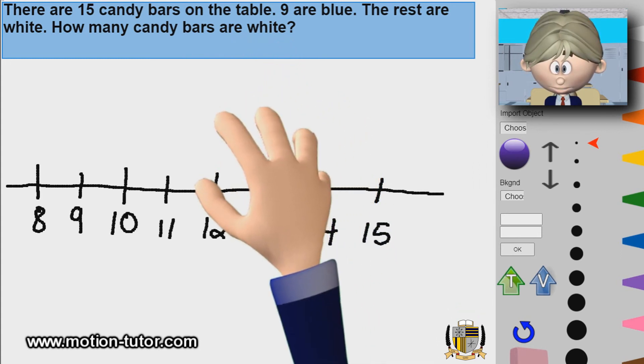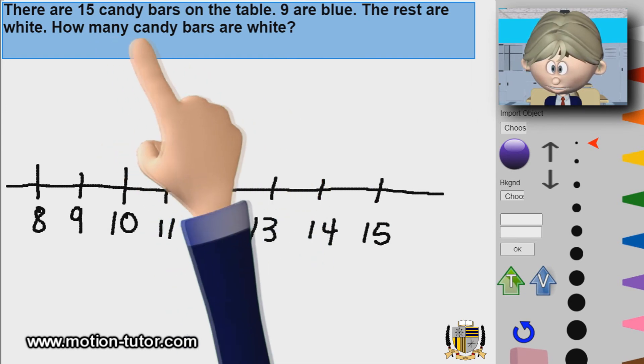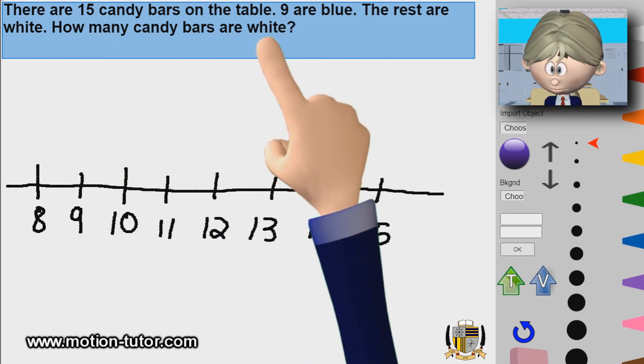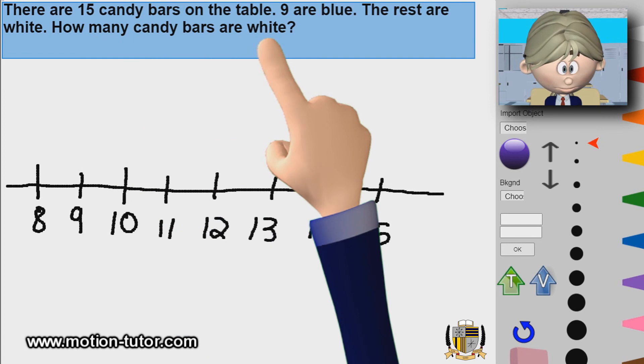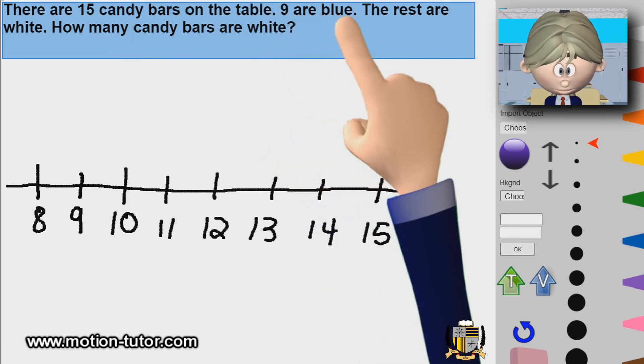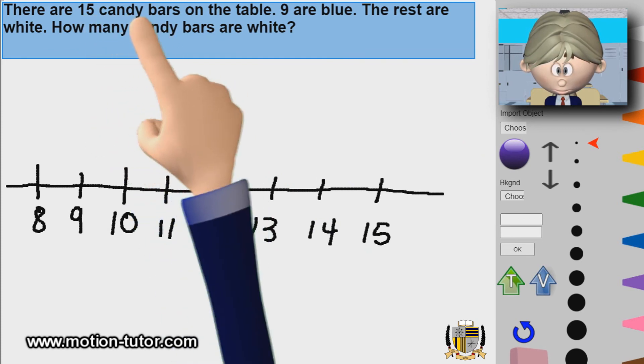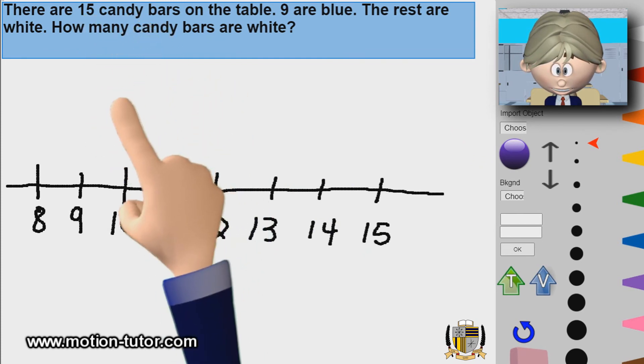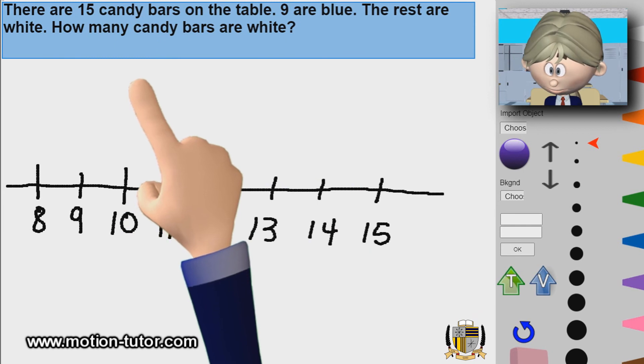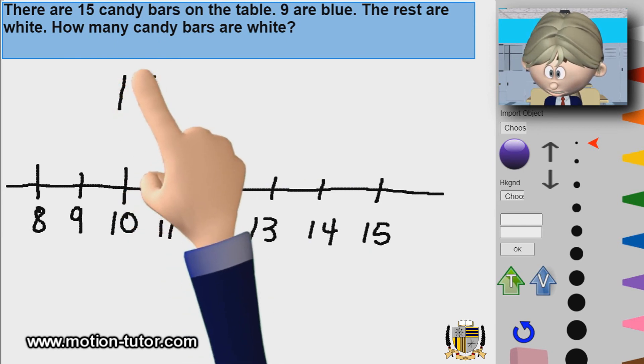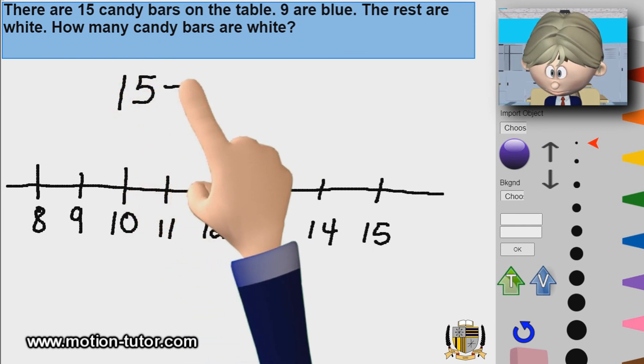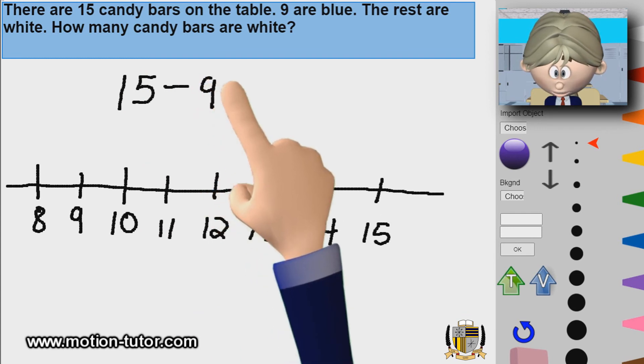What are we trying to find? We're trying to find how many candy bars are white. What information are we given to help us solve this? Well we know 9 are blue and there are 15 total. So that means out of the total, if I subtract the 9 blue ones, I would be left with the rest that are white.